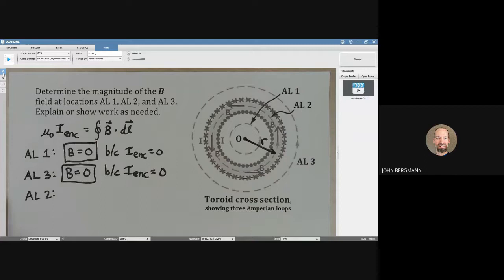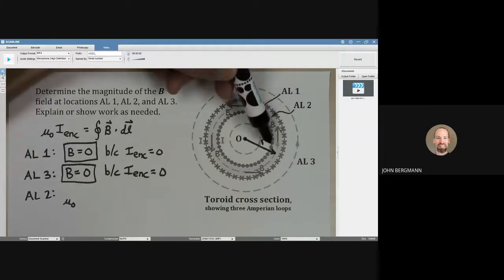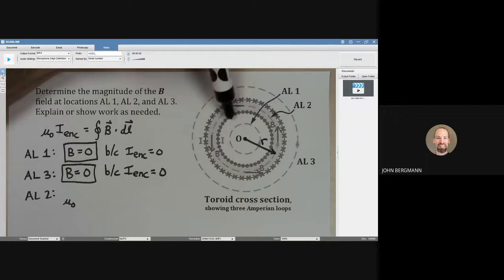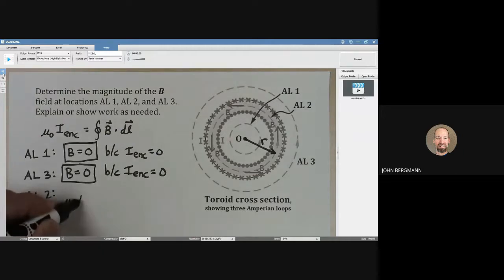Let's use Ampere's law. Ampere's law says mu naught. Now what's the total I that is enclosed? And you can look here and you can see that there is a net current flow that is coming out of the page at us and that's equal to n times the current that's flowing through that coil.